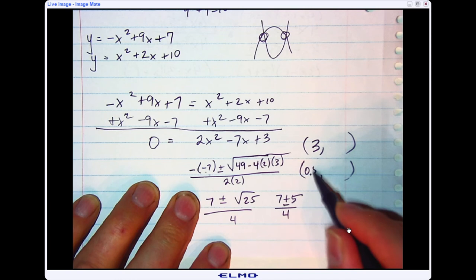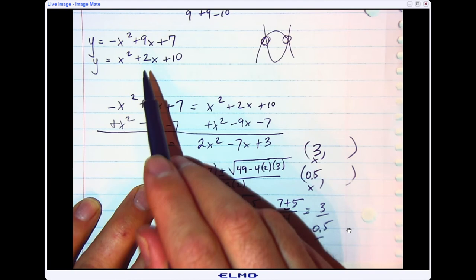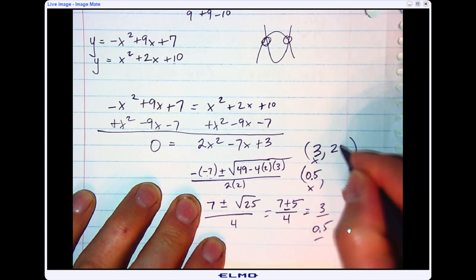3 and 0.5. So I'm going to put those in for x in my original equations to find out my y value. So if I put 3 in the bottom, 3 squared is 9, 2 times 3 is 6, 9 plus 6 is 15, plus 10 would be 25.